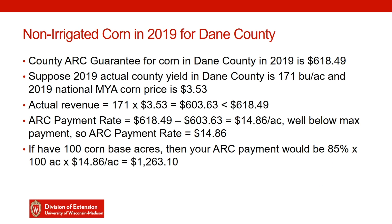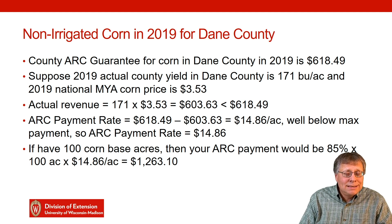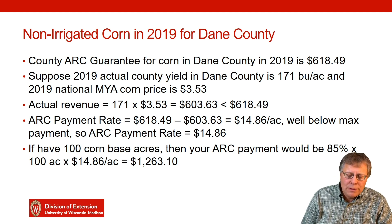Let's work through a simple example with made-up numbers. Suppose Dane County's actual yield is 171 bushels per acre and the national marketing year average price for corn is $3.53. Then 171 times $3.53 equals $603.63 of actual revenue — well below the guarantee of $618.49. So an ARC payment would be triggered: $618.49 minus $603.63 equals a $14.86 per acre payment rate, well below the maximum. If you have 100 base acres of corn, your ARC payment would be 85% times 100 base acres times $14.86, or $1,263.10. The key point is that the guarantee is tied to actual yields in the county and the national-level price.